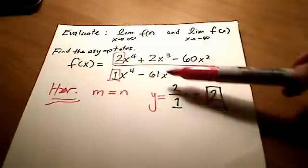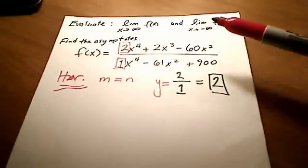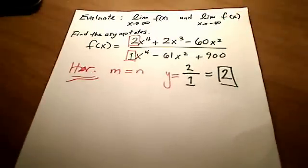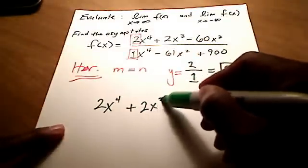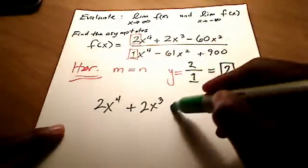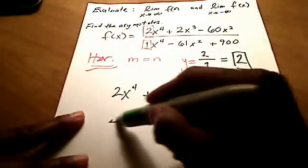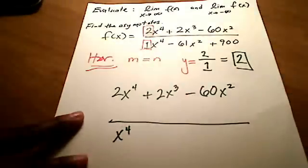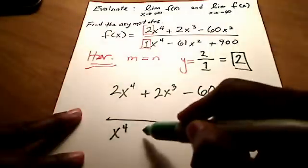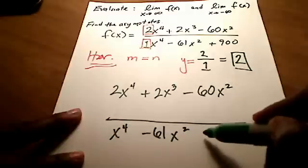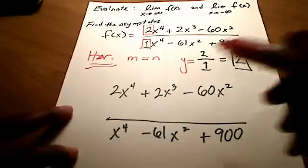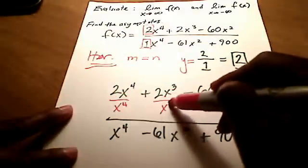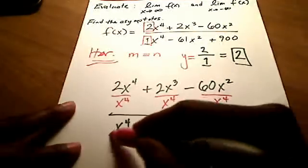The book also shows another method we could use with rational functions like these. You concentrate on the denominator and look at the denominator's largest exponent — in this case, it's 4. Rewriting the problem, since the denominator's largest exponent is 4, we divide every single term in the numerator and the denominator by x to the fourth.